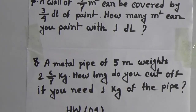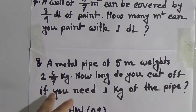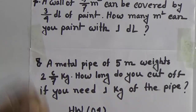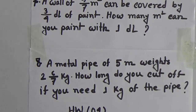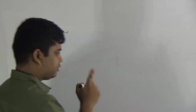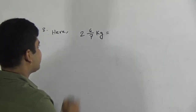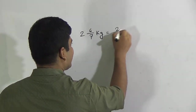Next, question 8: A metal pipe of 5 meters weighs 2 and 6/7 kg. How long do you cut off if you need 1 kg of the pipe? That means 2 and 6/7 kg is the weight of 5 meters of metal pipe, so 1 kg is the weight of how many meters? First convert the mixed fraction: 2 × 7 = 14, plus 6 = 20, so 20/7 kg. Therefore, 20/7 kg is the weight of 5 meters.